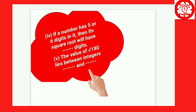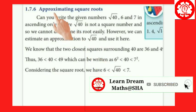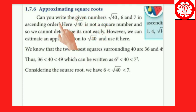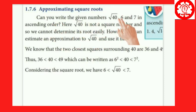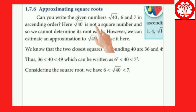I will explain it — this is the concept of approximating square roots, that is, finding the nearest approximation of square roots. For example, can you write the given numbers — root 40, 6, and 7 — in ascending order? Root 40 is not a perfect square number, so we cannot determine its root easily.